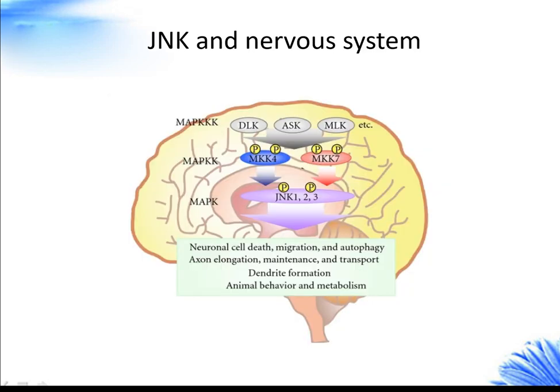JNK3 activation is a pro-apoptotic pathway in hippocampal neurons, consistent with a role for JNK3 in excitotoxic neuronal cell death. The role of JNK3 in excitotoxicity suggests that JNK/SAPK pathways would be involved in other neuronal death responses and neurodegenerative diseases such as Parkinson's and Alzheimer's disease.